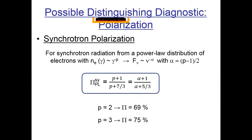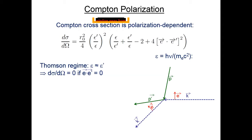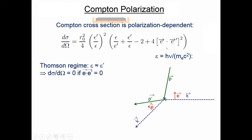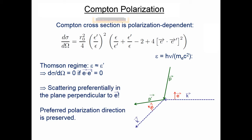I have some background on synchrotron radiation for reference. Less well known is that Compton scattering may also induce polarization — the Compton cross section is polarization-dependent. In this formula, E is the electric field vector of the incoming X-ray or gamma ray, E-prime that of the scattered photon. In the Thompson regime, in the electron rest frame, if the scattered photon energy is essentially the same as the incoming energy, the cross section is simply given by the dot product of the polarization vectors.